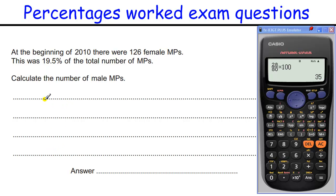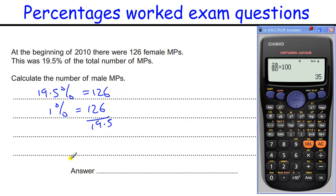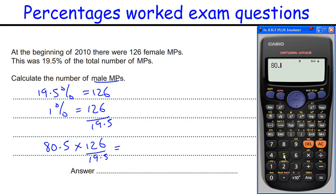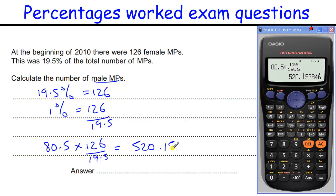Nineteen and a half percent of the MPs are female, and that's 126 people. So 1% will be 126 divided by 19.5, and we want to find how many male MPs there are. So we're going to do 80.5%, which makes the rest of the MPs, times by the 1%, which is 126 over 19.5. Do all that on a calculator — you get 520.15 something. Since we can only have a whole number of people, it's 520.